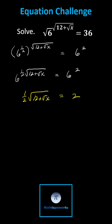To clear the fraction, multiply both sides by two, which gives us the square root of the quantity 12 plus the square root of x equals four.